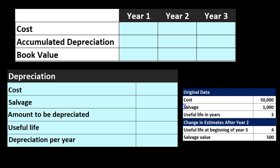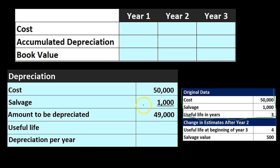Using the original data, we record depreciation for the first two years, then consider what the change does. Under straight line, we have $50,000 cost minus the $1,000 salvage value, giving us $49,000 to be depreciated. Divided by three years, that gives us depreciation of $16,333 per year — technically $16,333.33, so we're estimating to the nearest dollar.